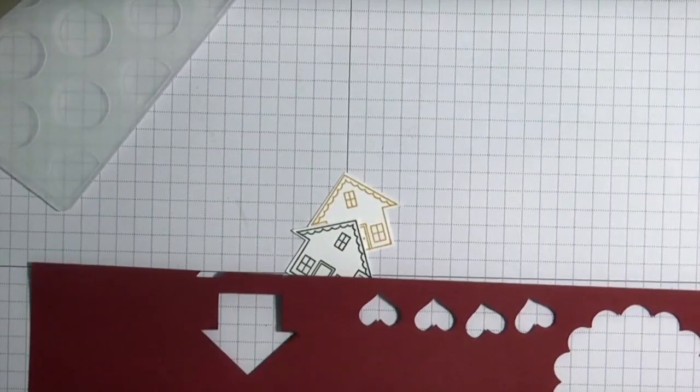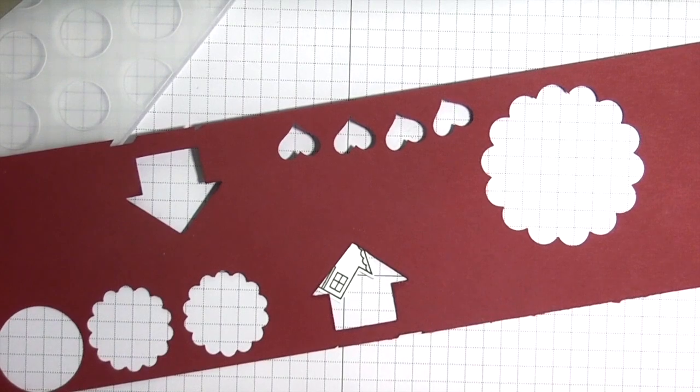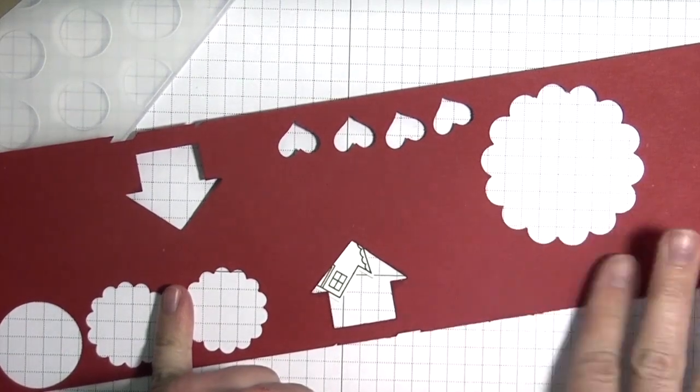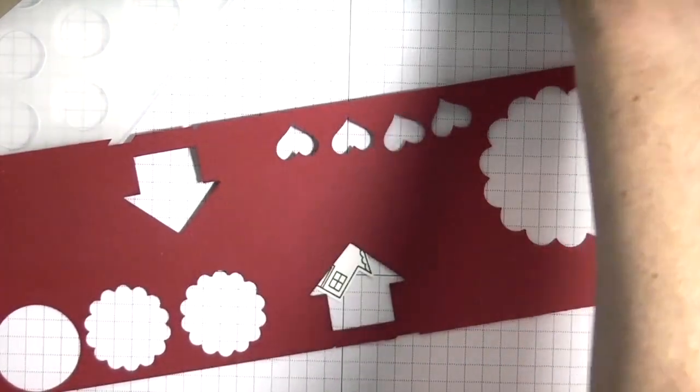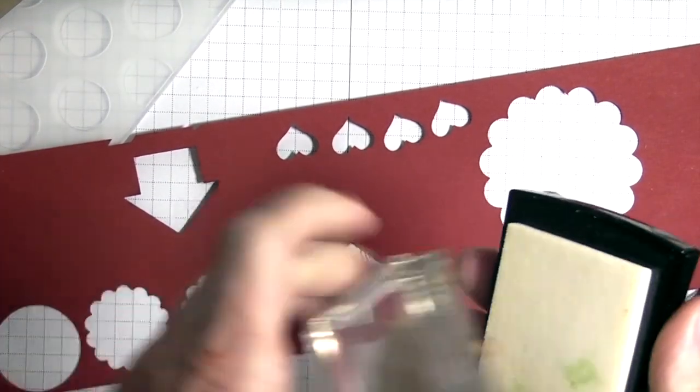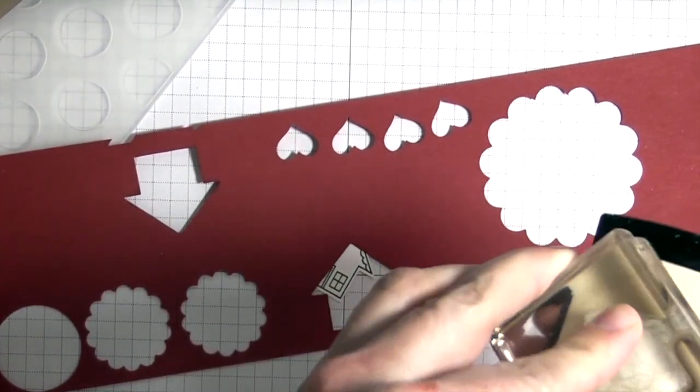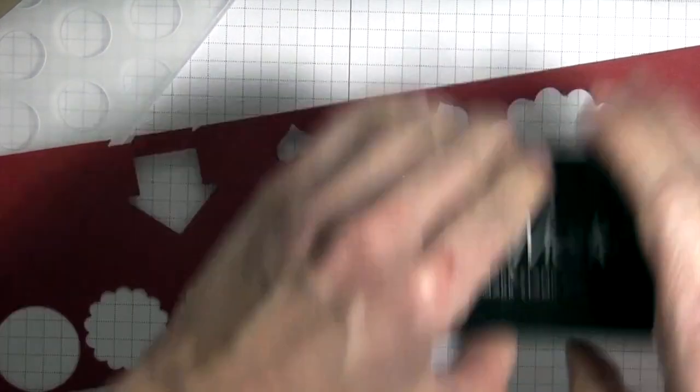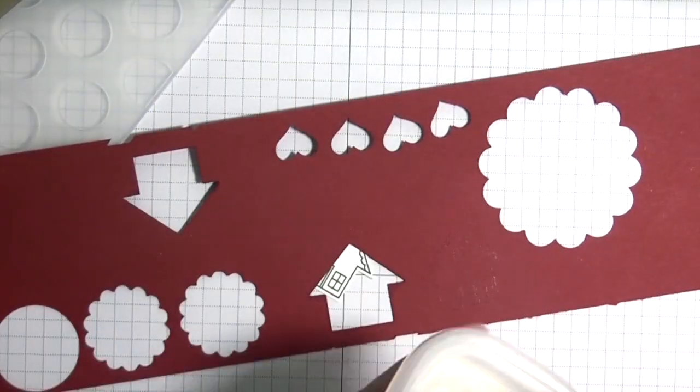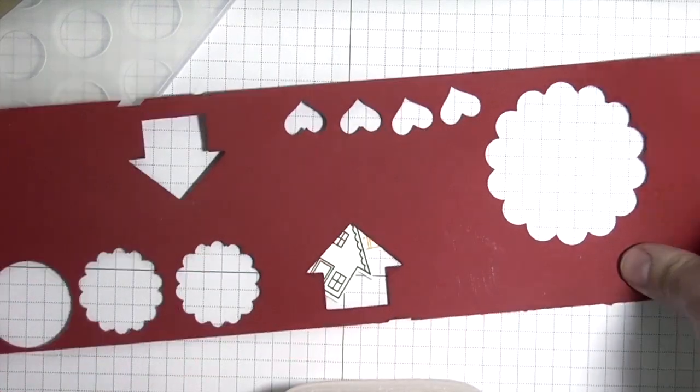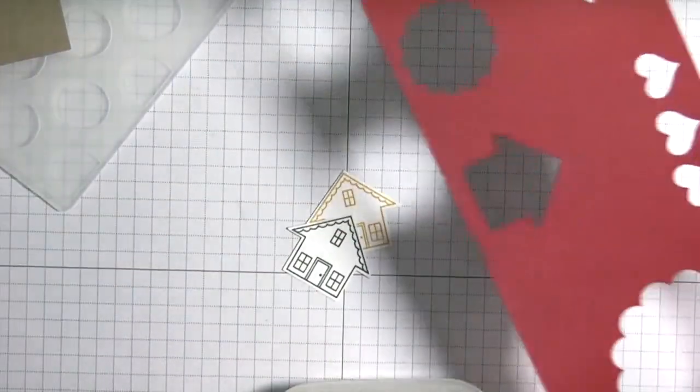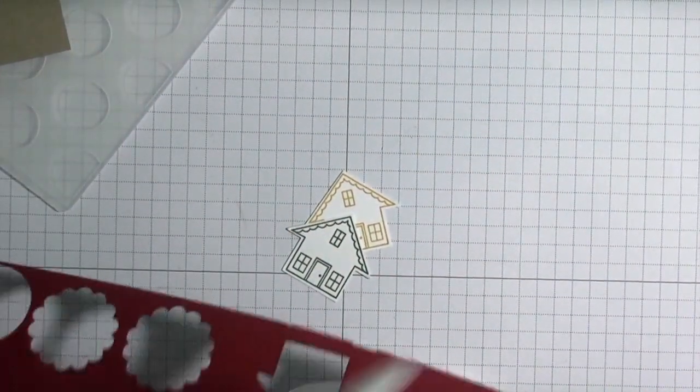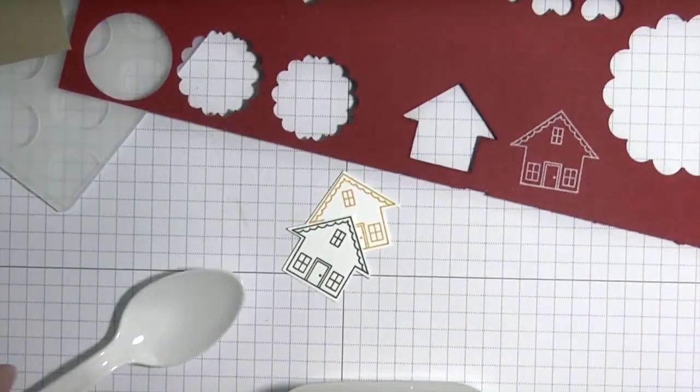I want to white emboss this, so I've got a piece of red cardstock. You want to use your embossing buddy so that the white embossing powder won't stick to other places. Use Versamark, which is just a clear sticky ink that is great for embossing. Then get out your white embossing powder, sprinkle it right over it, and shake off the rest.